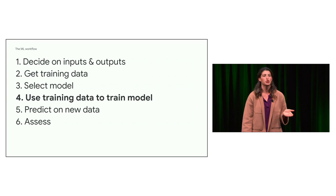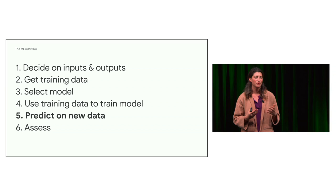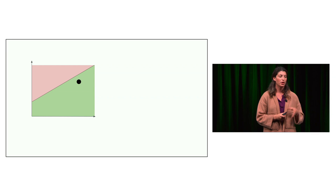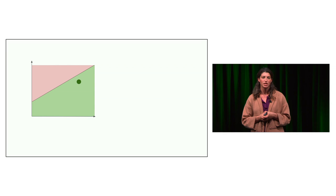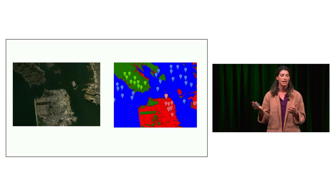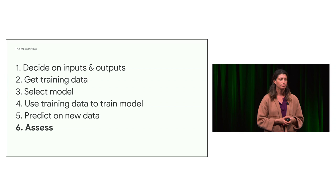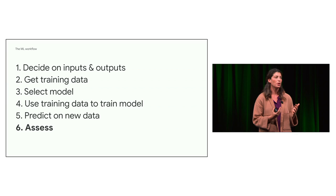When it's time to train the model, the algorithm tunes some parameters to fit the model to the training data. With a trained model, we're ready to show it new data — when a new data point comes in, the model predicts that it's in the green vegetation class. Going back to the land cover example: when we take our trained model and predict the land cover class for each pixel of the Landsat image, each pixel gets classified into vegetation, urban, or water. We then assess how well we did and, depending on results, tune the model and repeat.